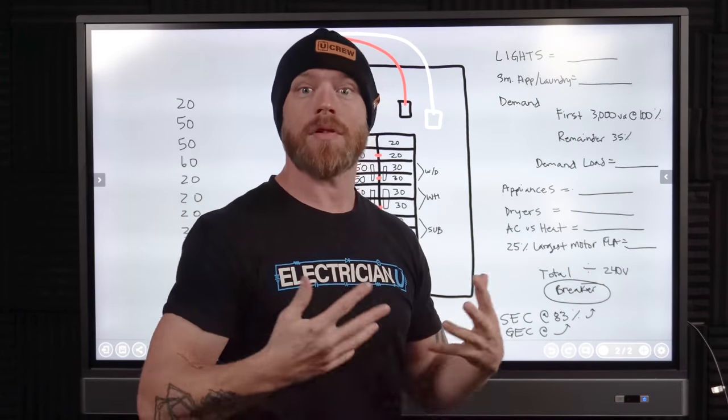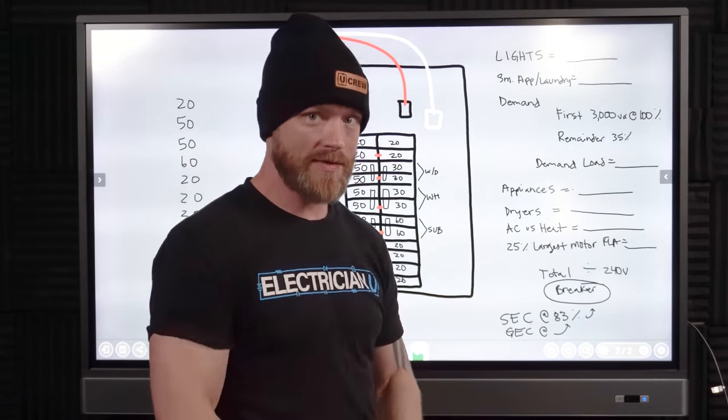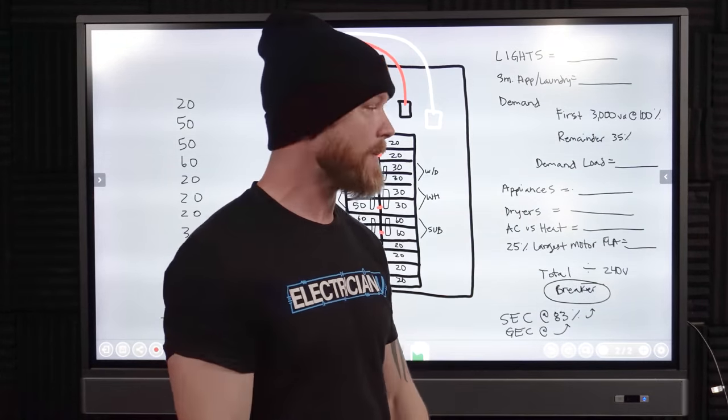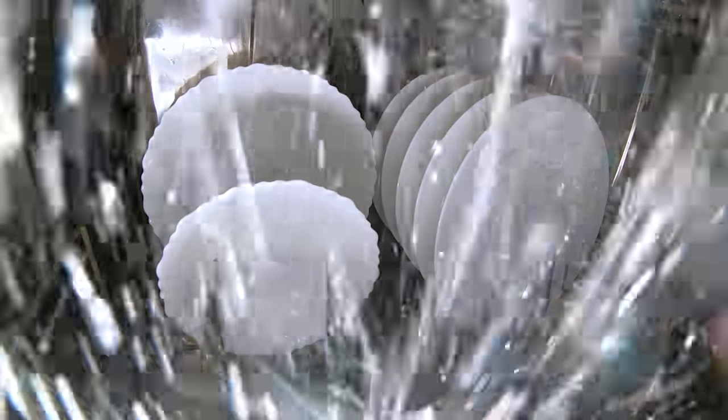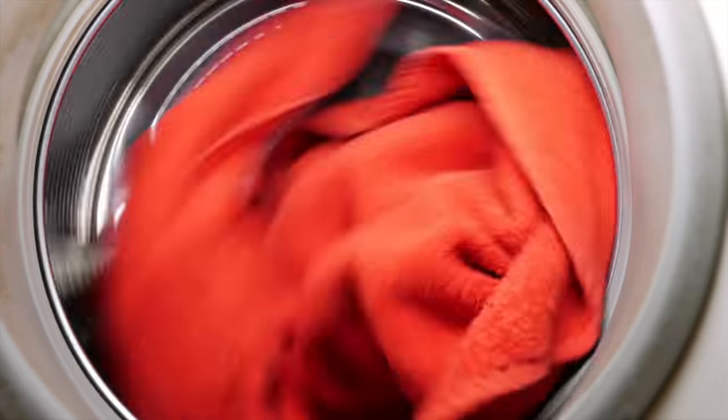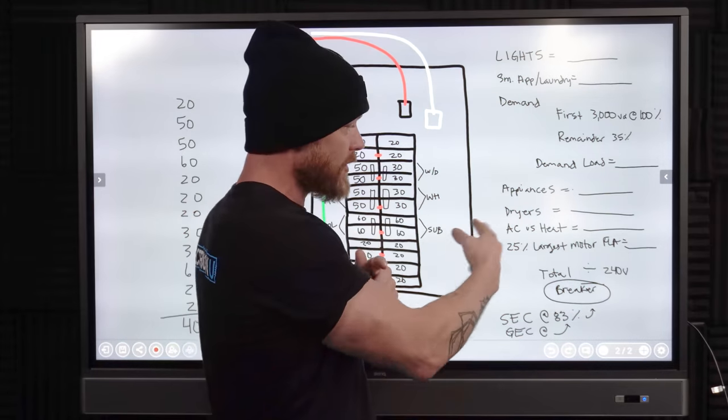So then once you get that all figured out, you're getting to go to the big things. We've got appliances. So there's certain appliances and houses that we're probably going to be running all the damn time. Dishwashers, water heaters, things like that. Then we have dryers, dryers specifically, they pull a lot of current. A lot of them are 240 volt 30 amp. So it needs its own line.